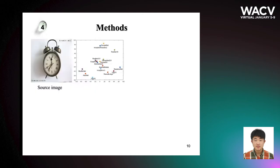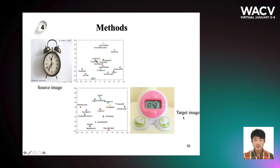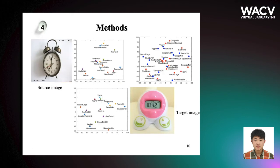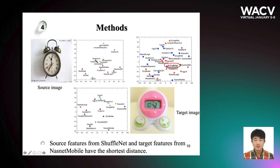In this toy example, we first use TSNE view to show the points of 16 pre-trained ImageNet models on this clock image. Similarly, in the target image, we also show the 16 points which represent features from the 16 neural networks. If we combine them together, we can find that the source feature from ShuffleNet and the target feature from NASNet Mobile have the shortest distance, which means that if we select these two networks as feature extractors, we can have higher performance in the target image.